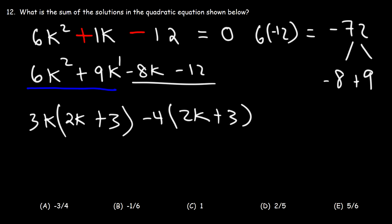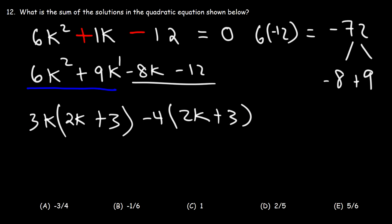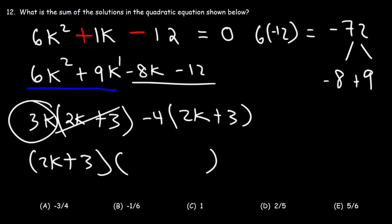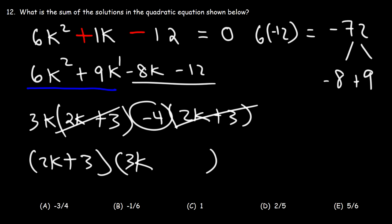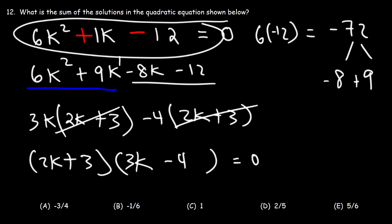Our next step is to factor out the GCF from the next two terms — one term being 3k times 2k plus 3, and the other being negative 4 times 2k plus 3. The greatest common factor is clearly 2k plus 3. When we take out 2k plus 3 from the first term, we're left with 3k, and from the second term we're left with negative 4.